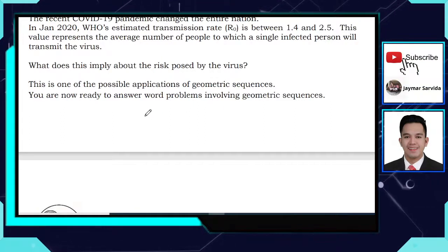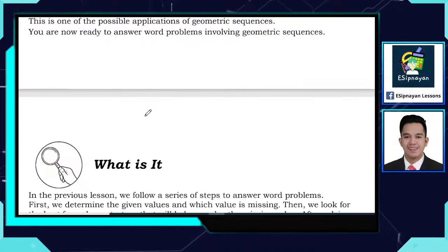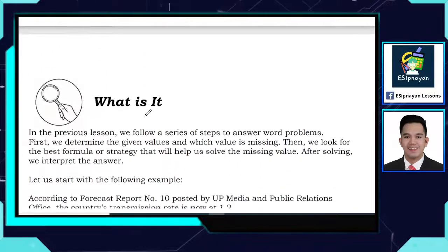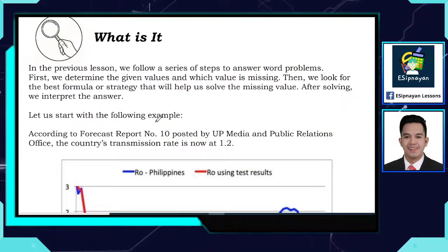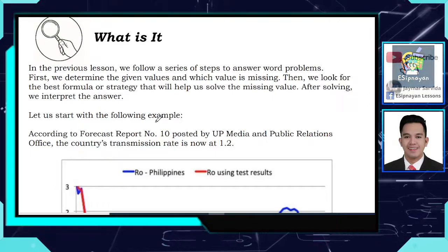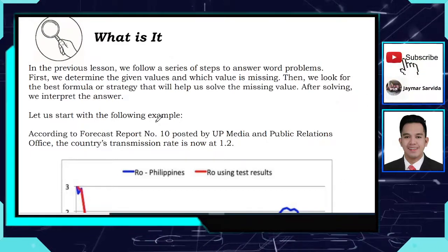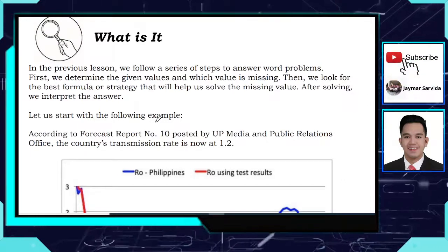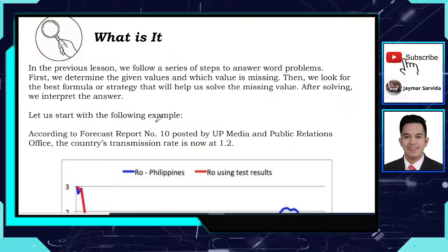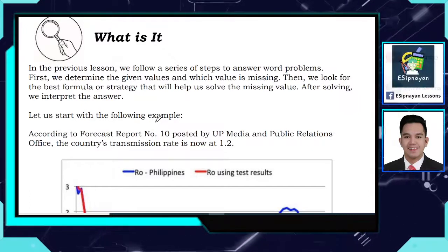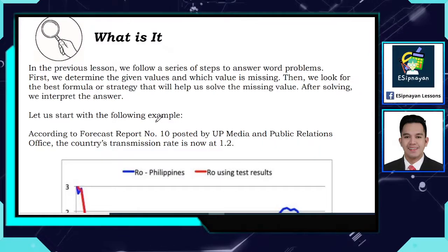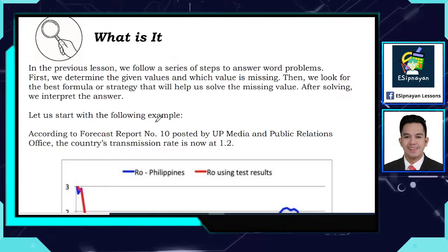You are now ready to answer word problems involving geometric sequences. In the previous lesson, we follow a series of steps: first, we determine the given values and which value is missing. Then, we look for the best formula or strategy that will help us solve the missing value. After solving, we interpret the answer.